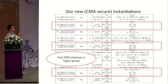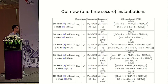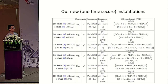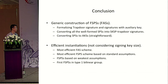These three FSPS schemes are the first FSPS schemes in the type 1 bilinear group. We also proposed one-time secure instantiations, which are relatively more efficient than the fully secure ones.